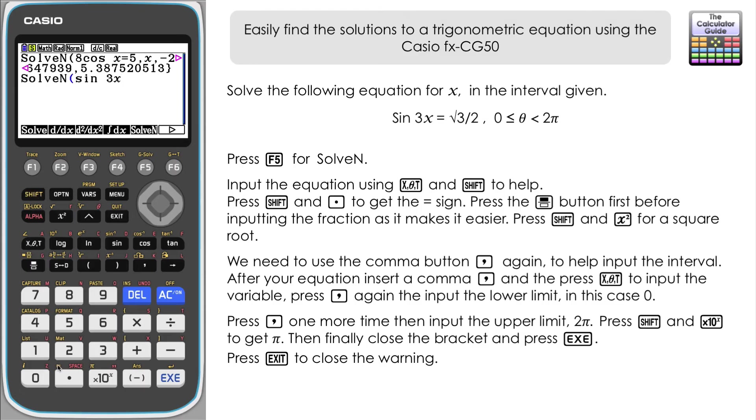Shift and decimal point gives us an equals, and then press the fraction button first in this case. I think it's a lot easier. And then square root 3, navigate down, and we've got 2 then on the bottom. And then we want to just navigate right to get back to the main working line so that we can then input our interval.